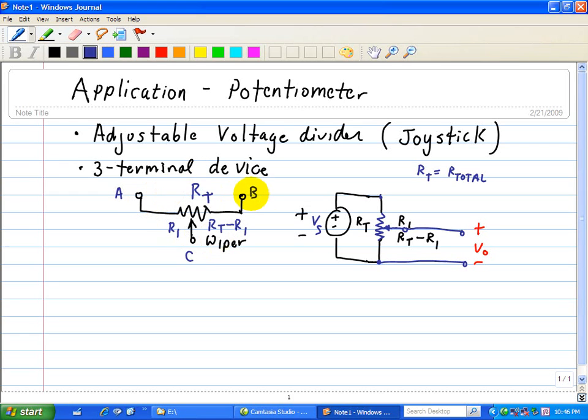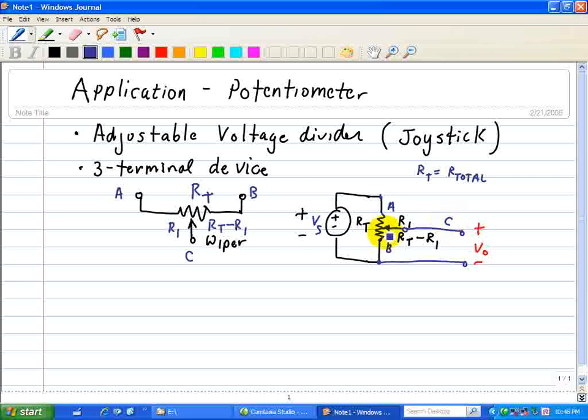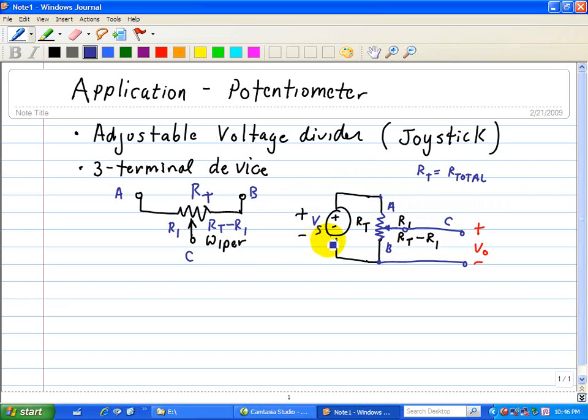So here is basically how a joystick operates. You have a voltage supply connected at nodes A and B of this potentiometer, and we have node C which adjusts it, which varies V0 from 0 to Vs.